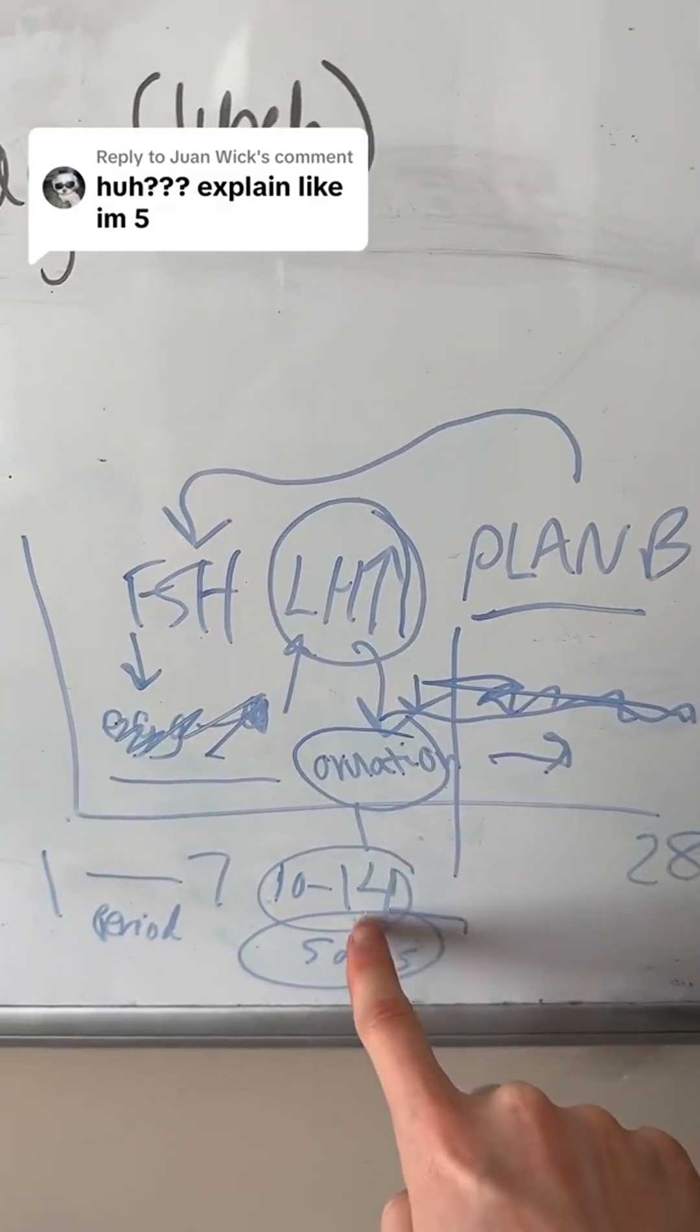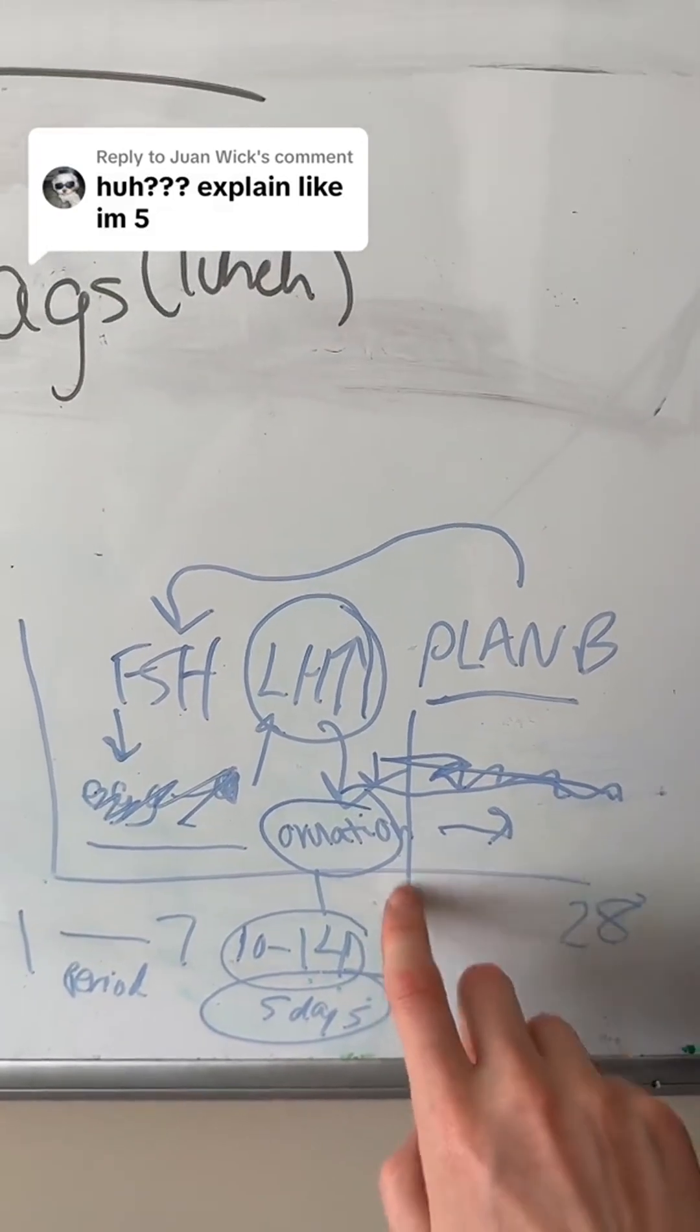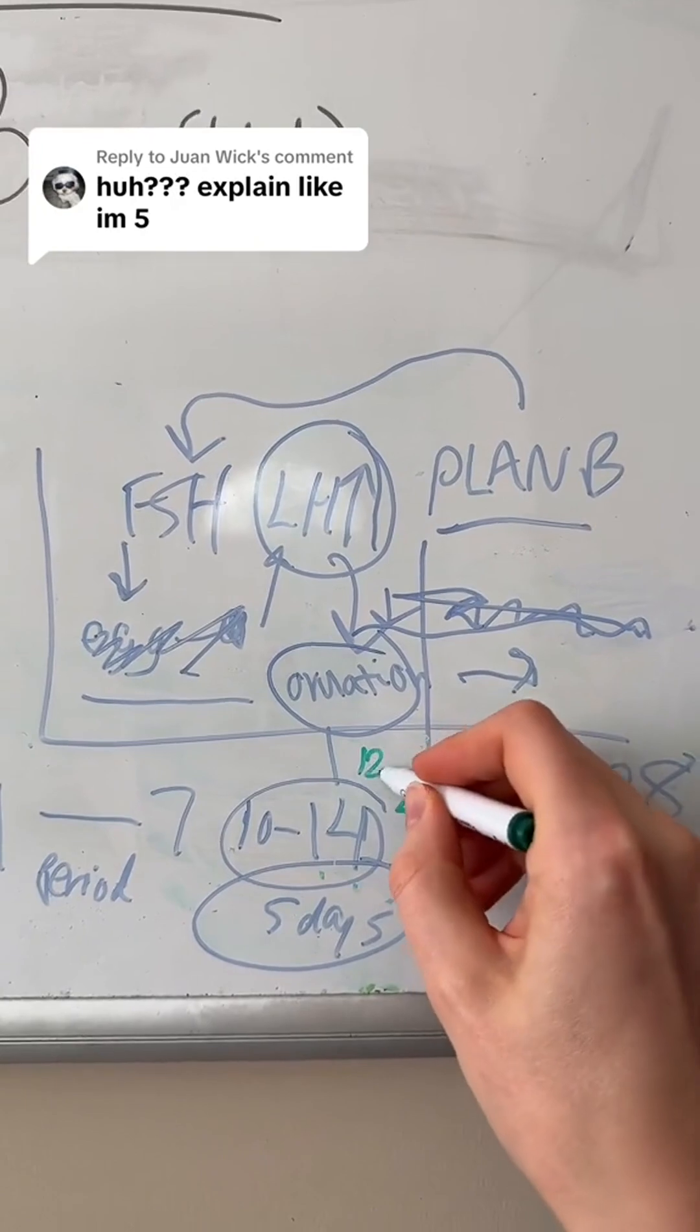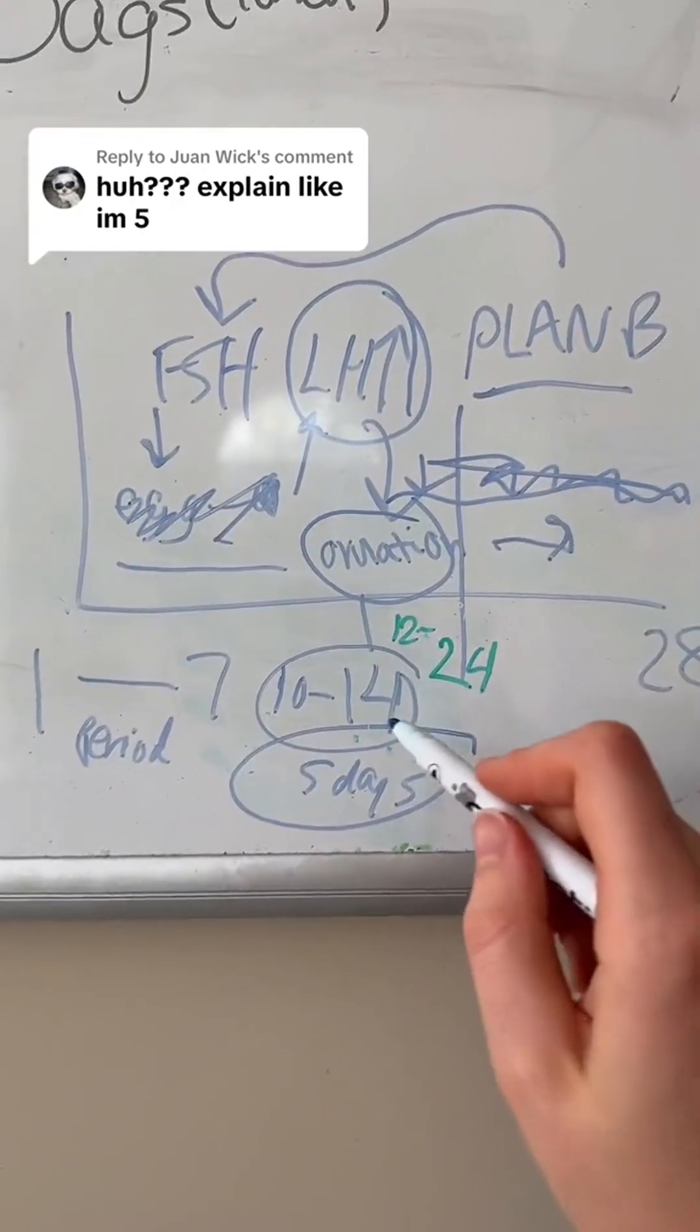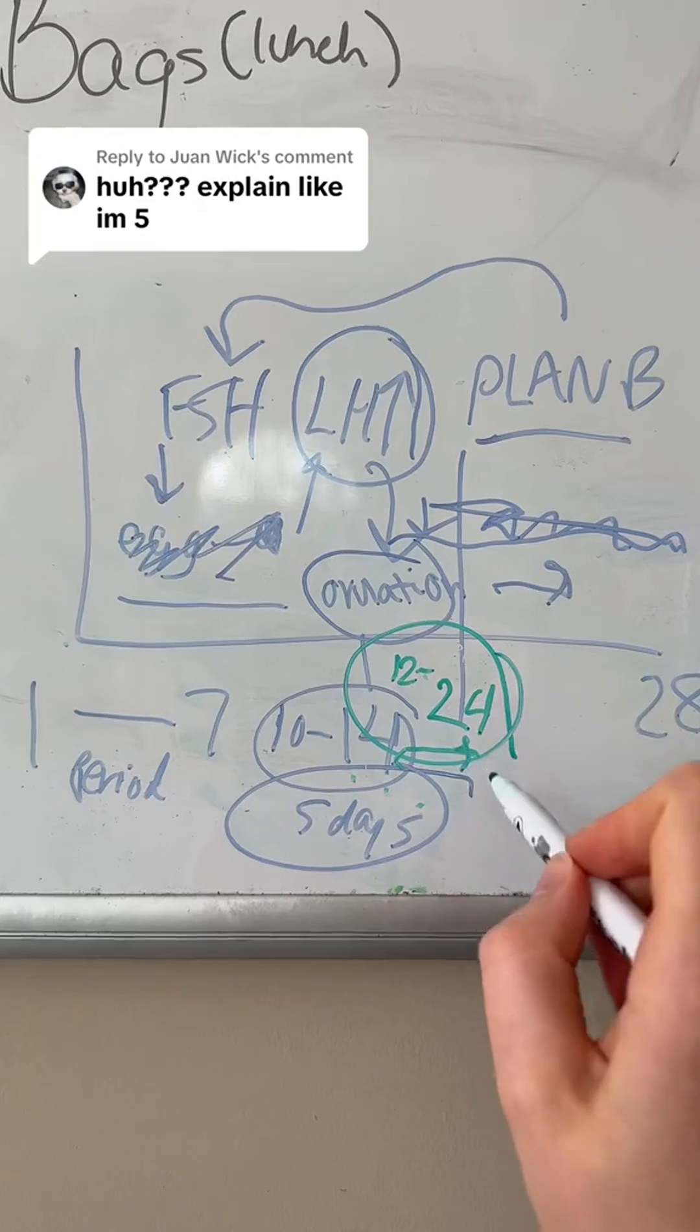Then a quick note here - on day 14 when you ovulate, that egg can survive for 24 hours, up to 24 hours, so 12 to 24 hours. So if you have sex after day 14, you could still get pregnant in those hours leading up to it.